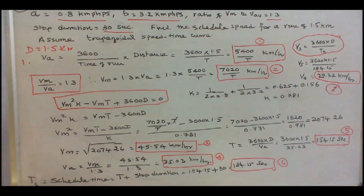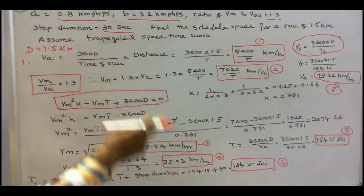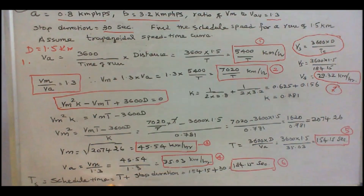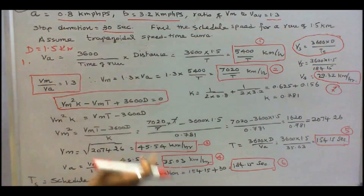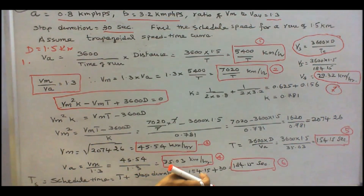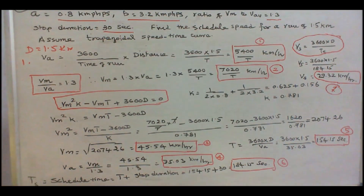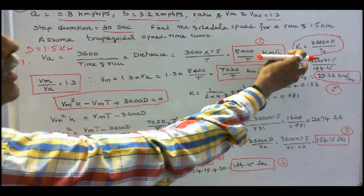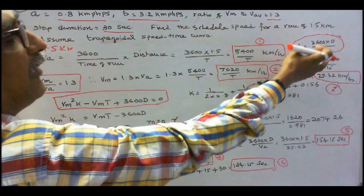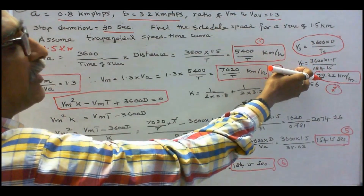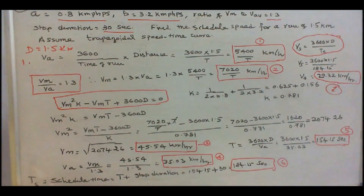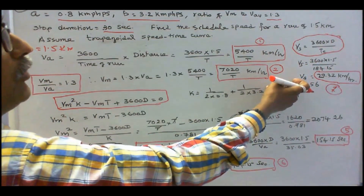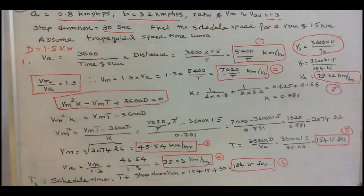Next, find the scheduled time: schedule time equals total time of run plus stop duration. Stop duration is given as 30 seconds, so schedule time ts equals 154.15 plus 30, which equals 184.15 seconds. Finally, schedule speed equals 3600 times d divided by ts, that is 3600 times 1.5 divided by 184.15, giving a schedule speed of 29.32 km per hour.